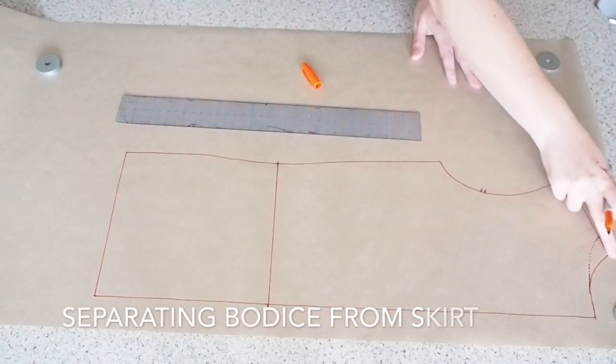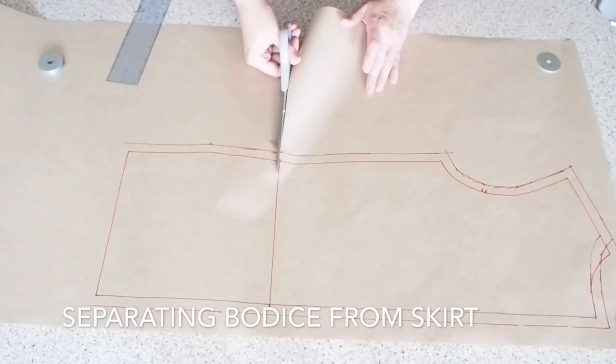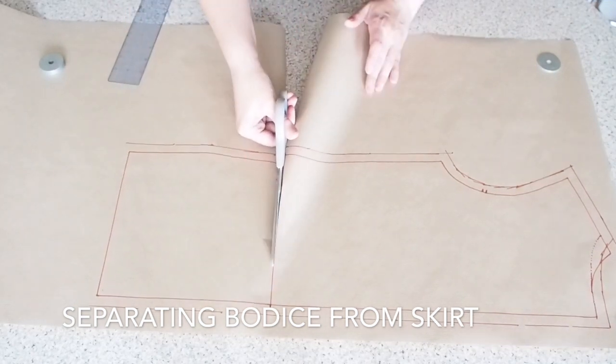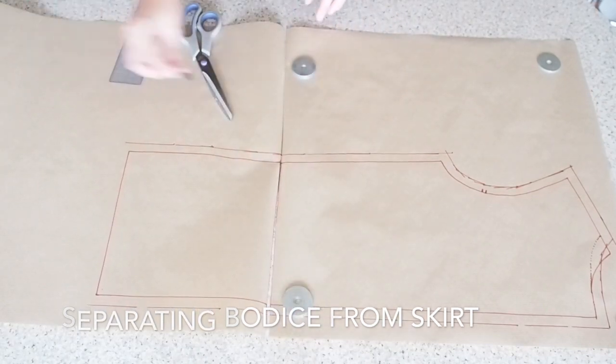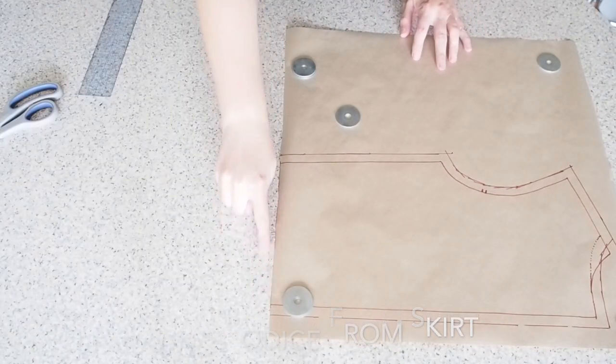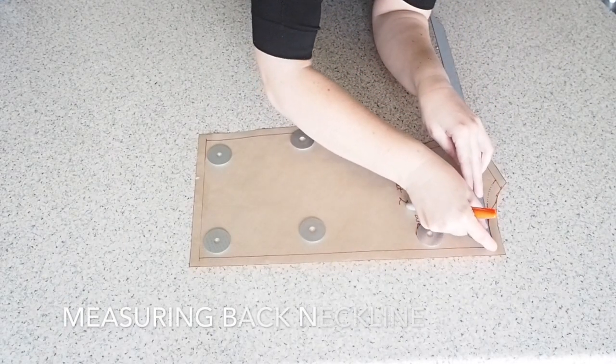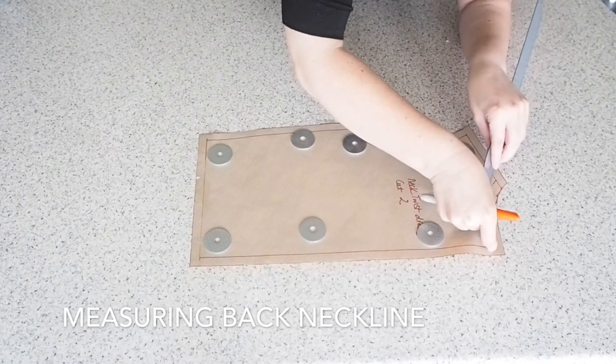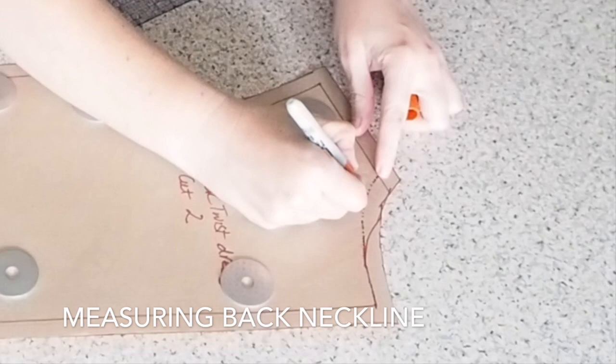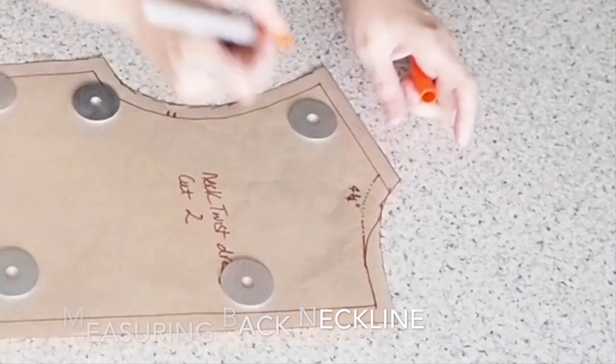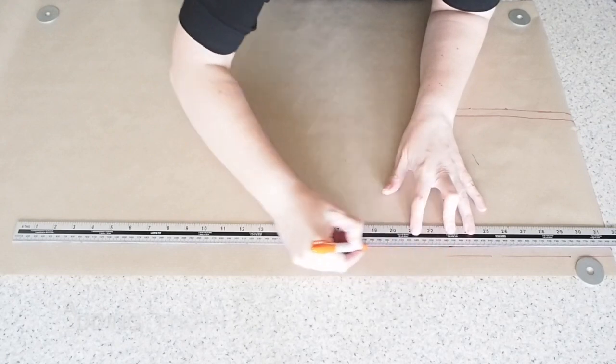Adding a one centimeter seam allowance. And then separating the skirt from the bodice. I'm just going to complete my bodice pattern here. And then I'll come back to the skirt. So to complete this pattern, I've added a one centimeter seam allowance at the waist. And now just measuring that new neckline. I'll need that measurement later on when I come to make my extension. But you'll see that in a second. So that's my back bodice complete.